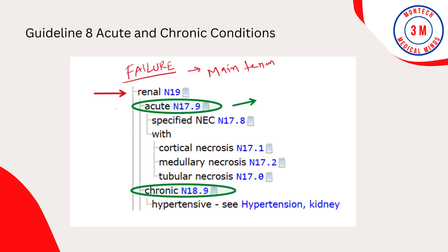Guideline 8: Acute and Chronic Conditions. If the same condition is described as both acute, subacute, and chronic, and separate subentries exist in the alphabetic index at the same indentation level, code both and sequence the acute or subacute code first. Example: Renal failure has two separate entries for acute renal failure and chronic renal failure. If the physician documents both acute renal failure and chronic renal failure, or acute on chronic renal failure, both codes are required — the acute code is sequenced first, followed by the chronic code.